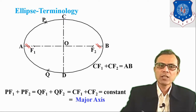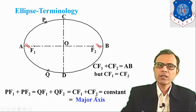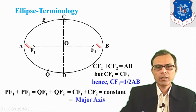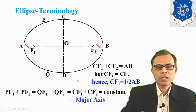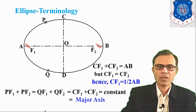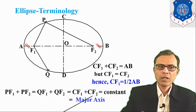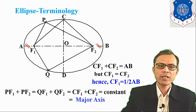Now, CF1 plus CF2 is equal to AB, as we discussed. Also, CF1 is equal to CF2, so we can say that either CF1 or CF2 is equal to half of the major axis. These are the key relations or equations which are required to remember. Sometimes some data are given and some data need to be found out. The relevant distances are PF1, PF2, QF1, QF2, CF1, and CF2.